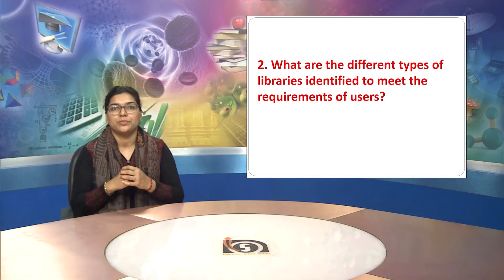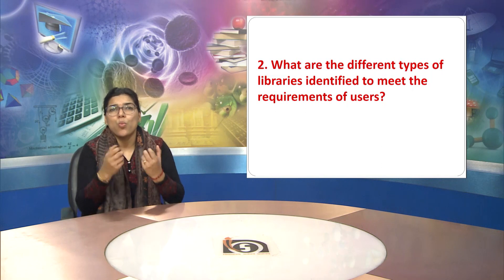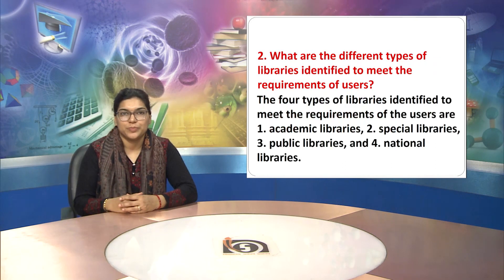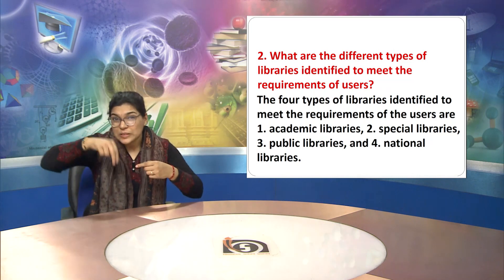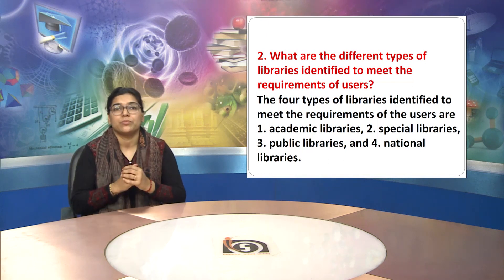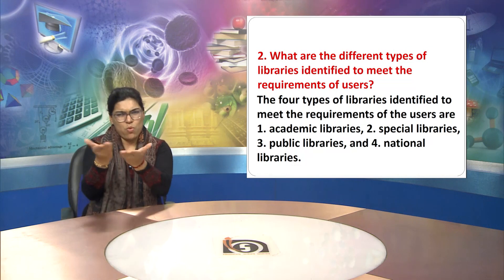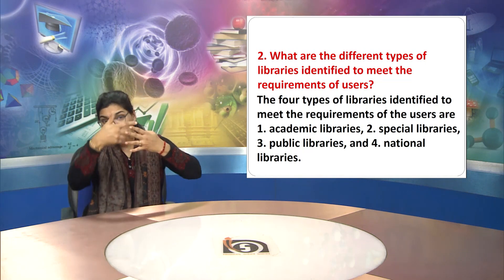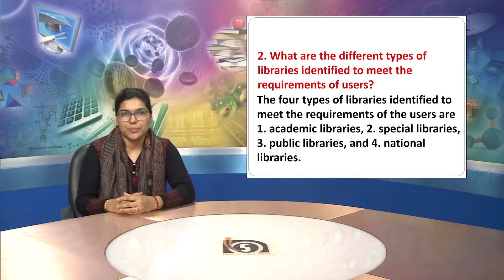Question two: What are the different types of libraries identified to meet the requirements of users? The four types of libraries identified to meet the requirements of the users are: the first one is academic libraries, the second one is special libraries, the third one is public libraries, and the fourth one is national libraries.